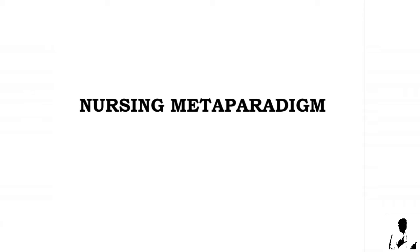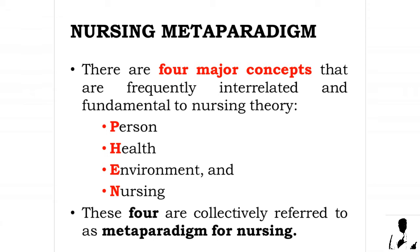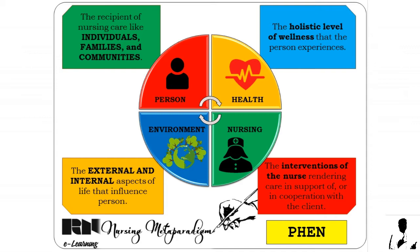There are four major concepts that are frequently interrelated and fundamental to nursing theory, namely: person, health, environment, and nursing. These four are collectively referred to as the meta-paradigm for nursing. To easily remember the nursing meta-paradigm, always remember our mnemonic: PHEN.